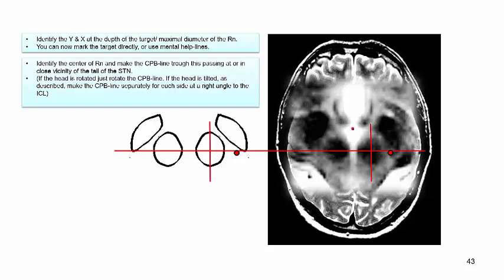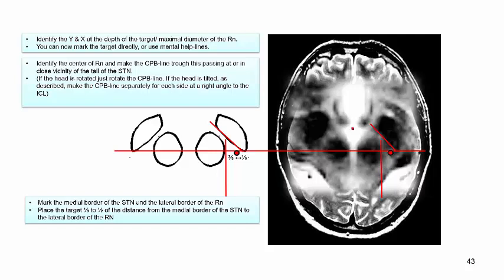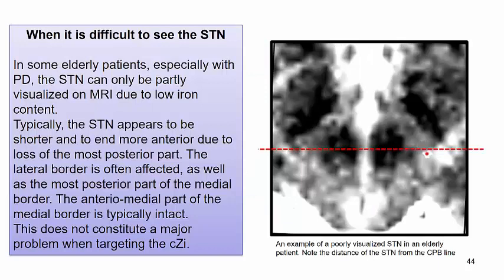If the head is rotated, simply rotate the CPB line. If the head is tilted, make the CPB line separately for each side at the right angle to the intercommissural line. Mark the medial border of the STN and the lateral border of the red nucleus, and place the target at one third to one half of the distance from the medial border of the STN to the lateral border of the red nucleus.